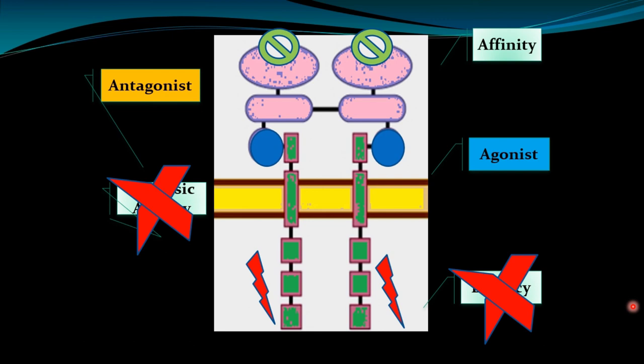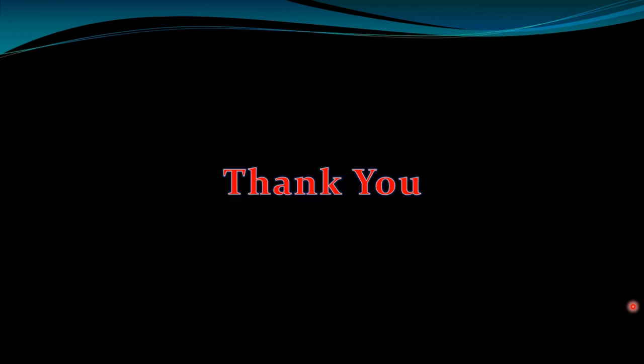Drug receptors are regulatory proteins that mediate or initiate the actions of endogenous chemical substances. They may be enzymes, like dihydrofolate reductase, which is inhibited by trimethoprim. Receptors might also be transport proteins, like sodium-potassium ATPase, which is the target for digitalis glycosides like digoxin. Or they might be structural proteins, like tubulin, which is the receptor for colchicine — the anti-inflammatory drug used for the treatment of gout. These are the different types of receptors. Thank you very much.